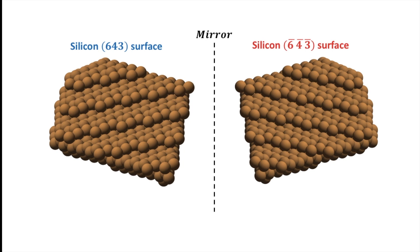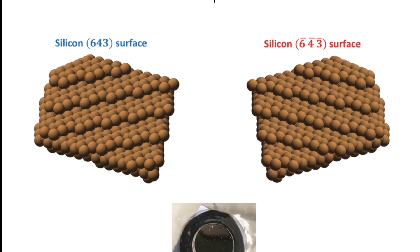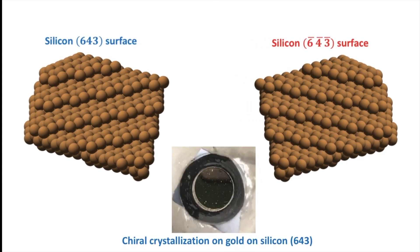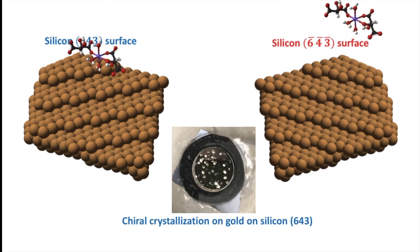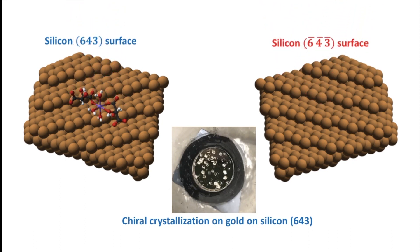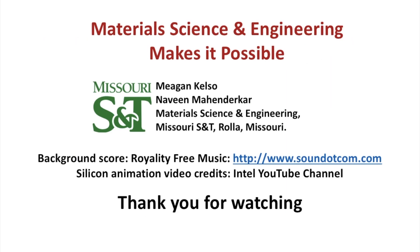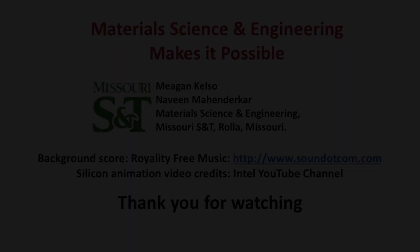This chiral surface can be tuned using simple techniques like electrodeposition to grow different materials, which each medicine will be most active on. The chiral surface will interact with molecules in different medicines to sense or separate each hand from the other. Using these inexpensive techniques, chiral surfaces can reduce the cost and side effects of medicine, and material science and engineering makes it possible.